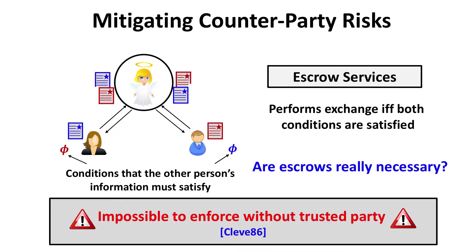Today these information exchanges happen all the time, so how do we mitigate counterparty risks? The way we do it is by using escrow services. Alice and Bob both trust some escrow and use its help to exchange information. They specify conditions on the other person's information, send this to the escrow, the escrow checks if the information is legit, and if everything is fine, it performs the exchange. You can make it self-enforcing if you are willing to trust an escrow.